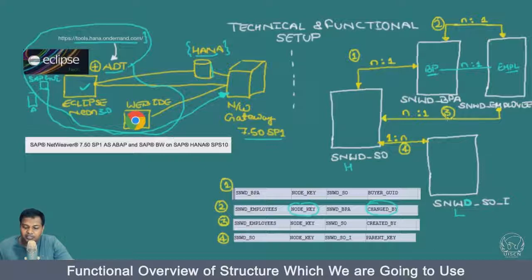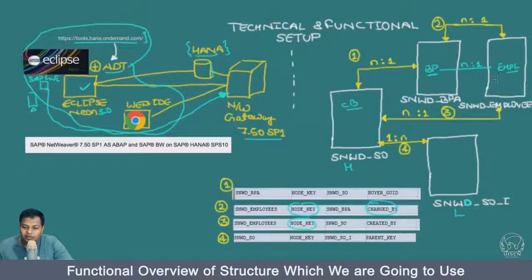In the same case, we have a third connection from sales order header to employees. Employees has node key again, and the sales order header has 'created by'. There can be multiple sales orders which can be created by one single employee, so there's an N-to-one relationship. This is the header table, so multiple sales order headers. It will be a little surprising that node key is used here because this is a development system.